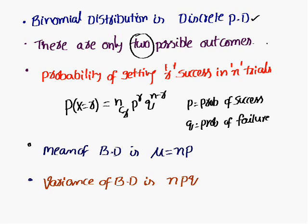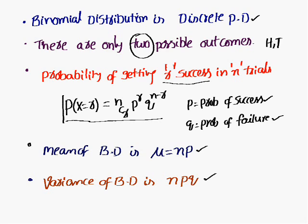Suppose, when a coin is tossed, you are going to get a head or a tail — either head or tail. So, the possible outcomes is two, that's why we can use the binomial distribution. The probability of getting R successes in N trials: the formula is P(X = R) = NCR into P-power-R into Q-power-(N minus R), where P stands for the probability of success, Q stands for the probability of failure. Mean of the binomial distribution is N into P and variance is N into P into Q.